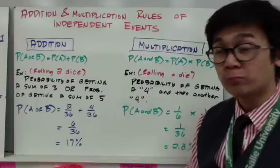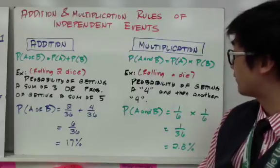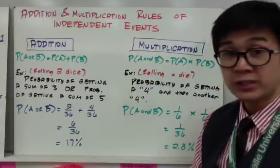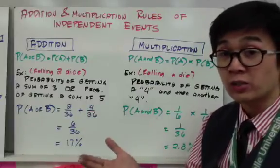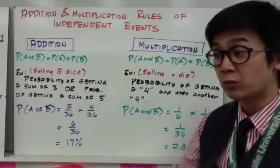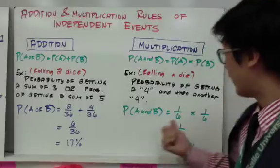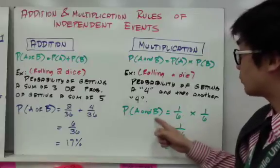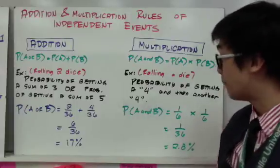In the multiplication example, we roll a single die twice and look for the probability of getting a four and then another four. The probability of rolling a four on the first roll is one out of six, and on the second roll it is also one out of six. Using the multiplication rule, P(A) × P(B) = 1/6 × 1/6, which gives approximately 2.8%. So the probability of rolling two consecutive fours is 2.8%.